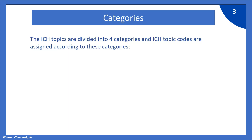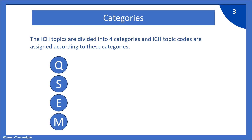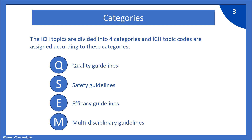Now let us see the categories. The ICH topics are divided into 4 categories and ICH topic codes are assigned according to these categories. In this video, we will focus on Quality Guidelines.